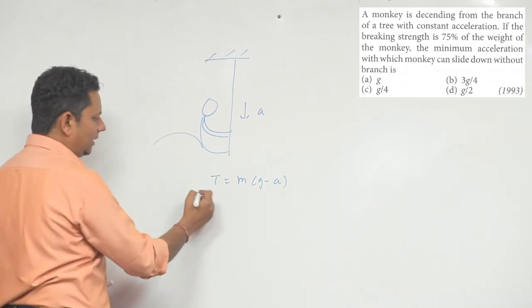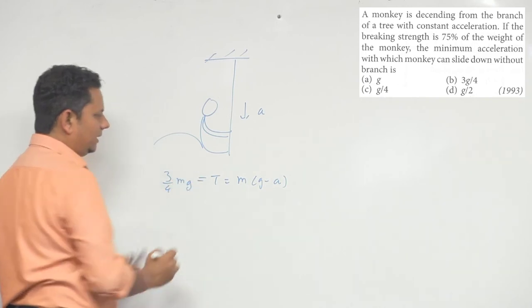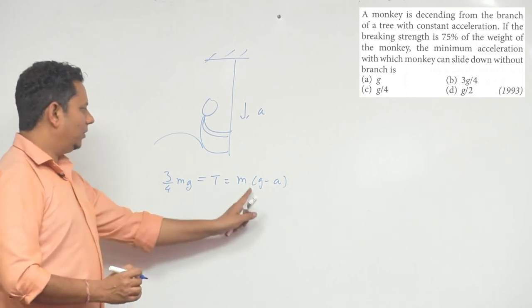And the maximum tension is equal to 3 by 4 MG. So if we can equate them, then M will get cancelled.